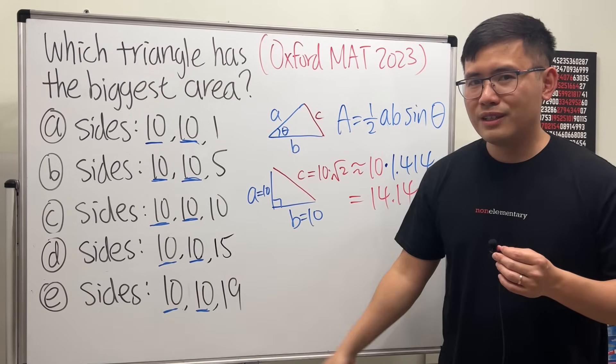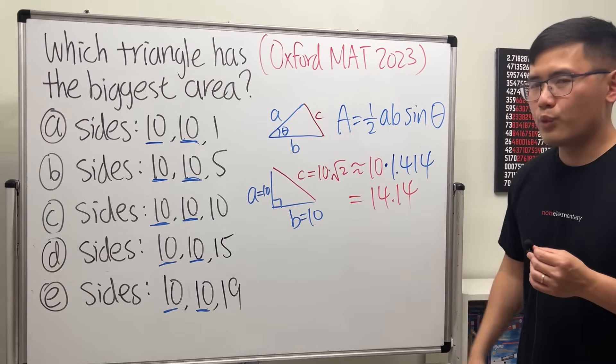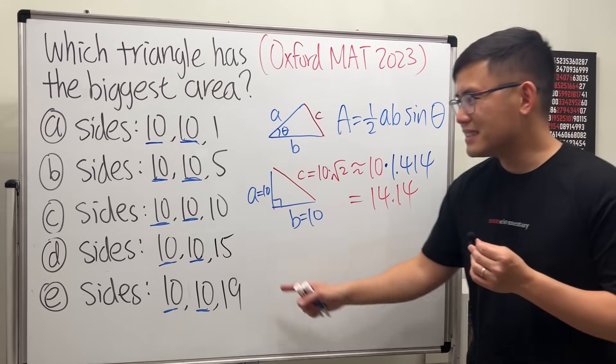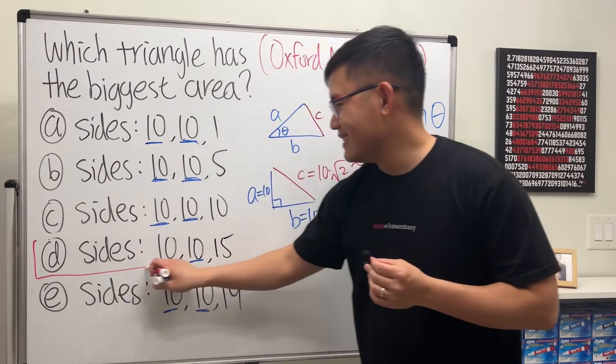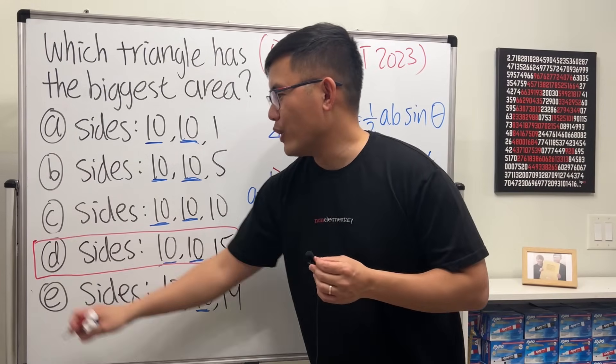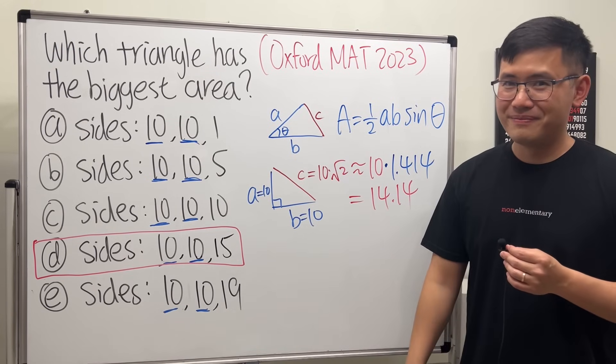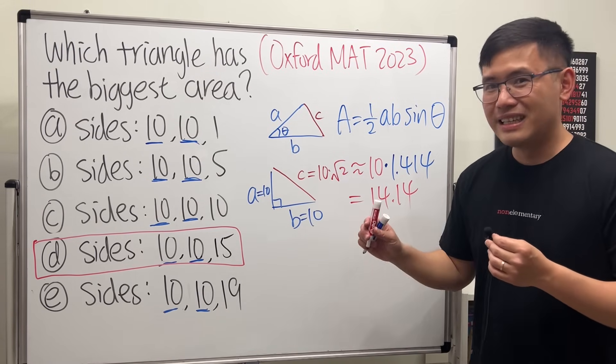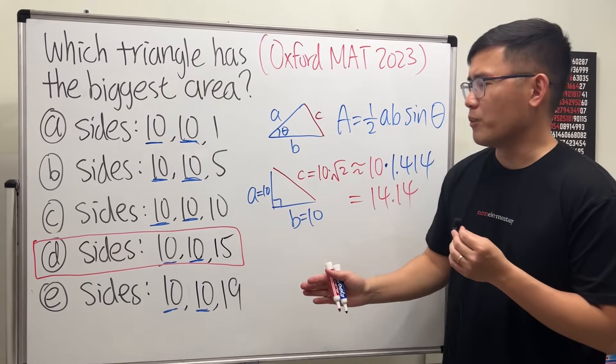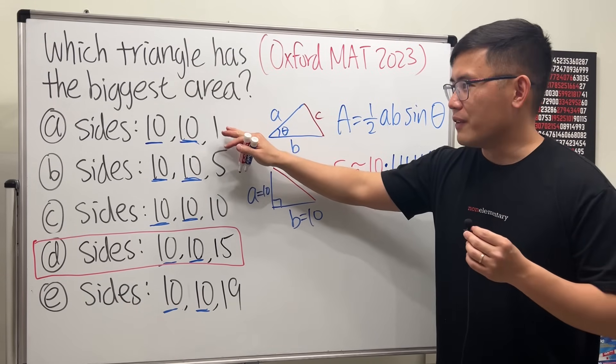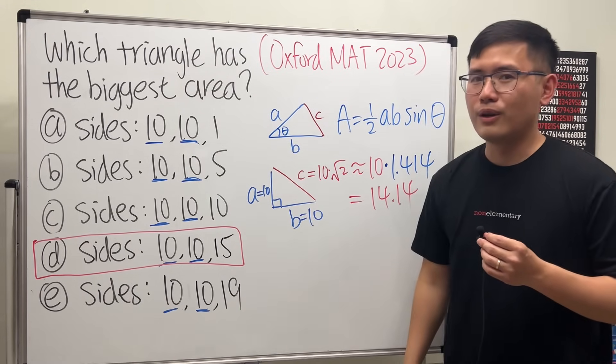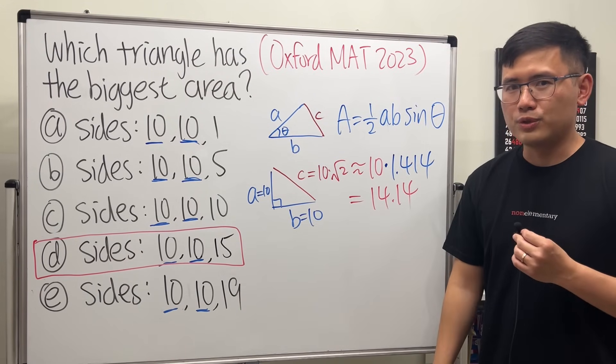Which of these numbers is closest to 14.14? The answer for that is D, the 15. So this will have the biggest area among all these options. It's so cool, isn't it? By the way, you can also use Heron's formula to compute the area of these triangles, and leave a comment down below and let me know what you get.